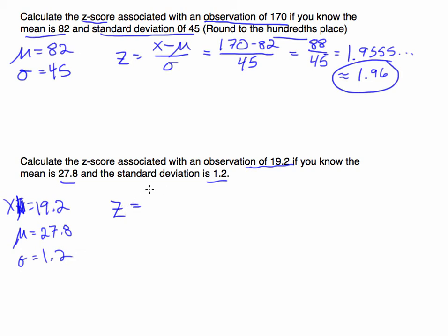So let's just plug this into the formula. If I were to take this formula, the observation, which is 19.2, subtract the mean, which is 27.8. I know that's going to give me a negative number. So I already have that going into the next step.